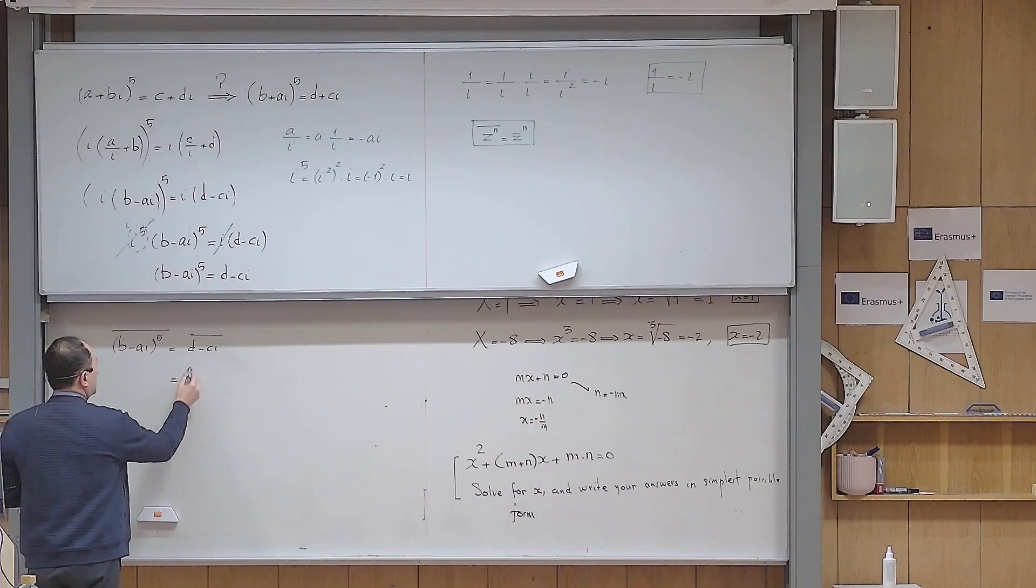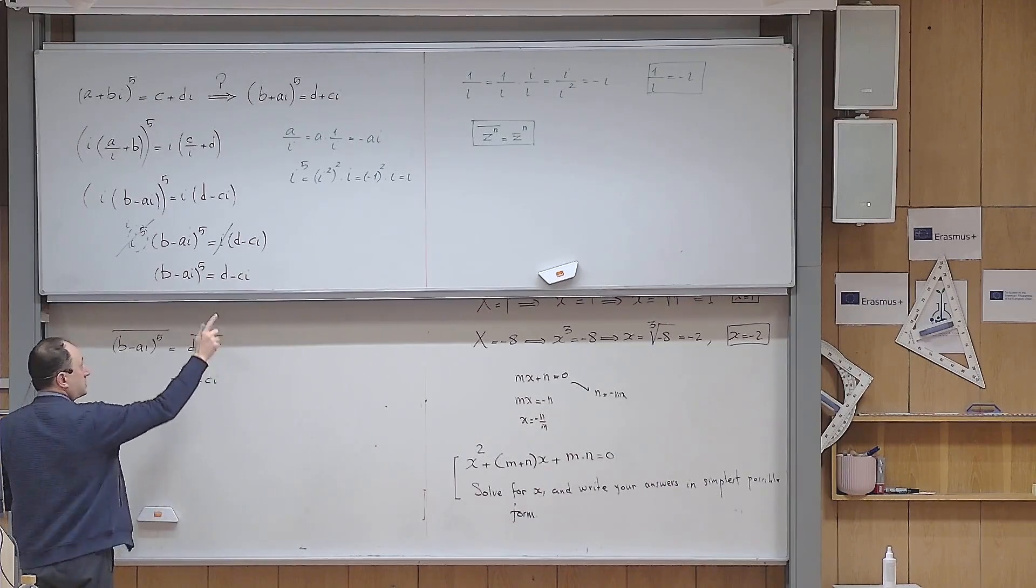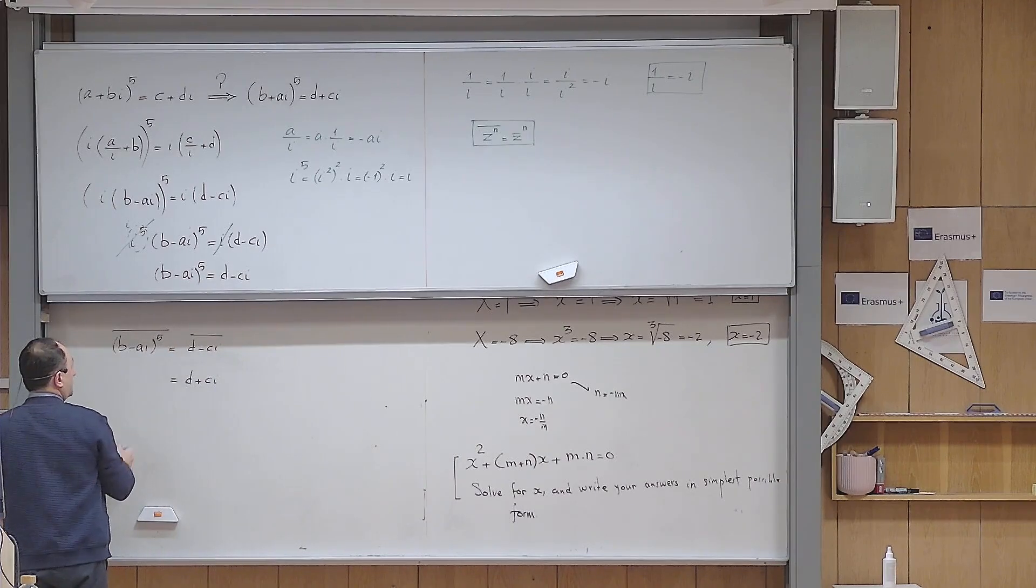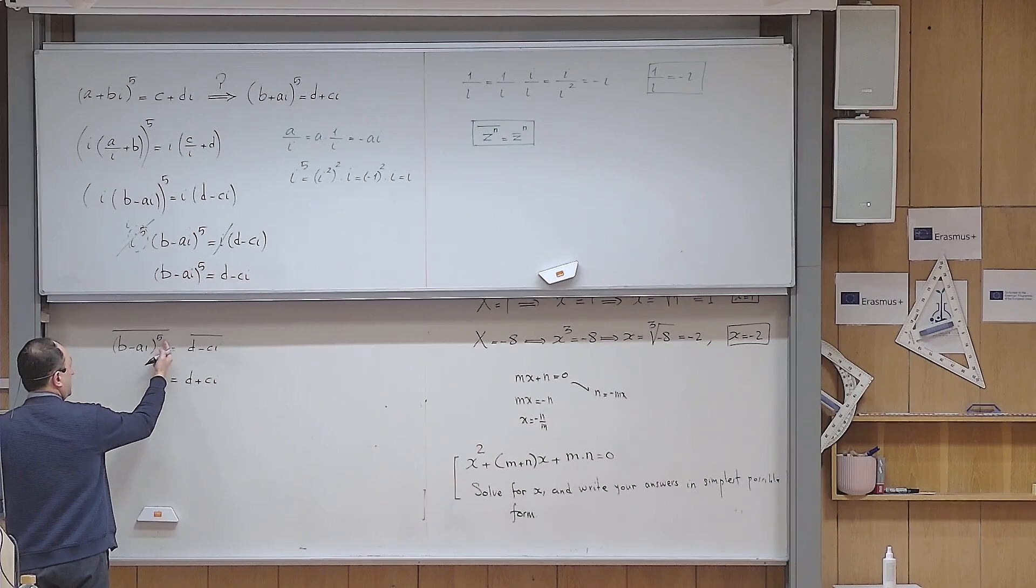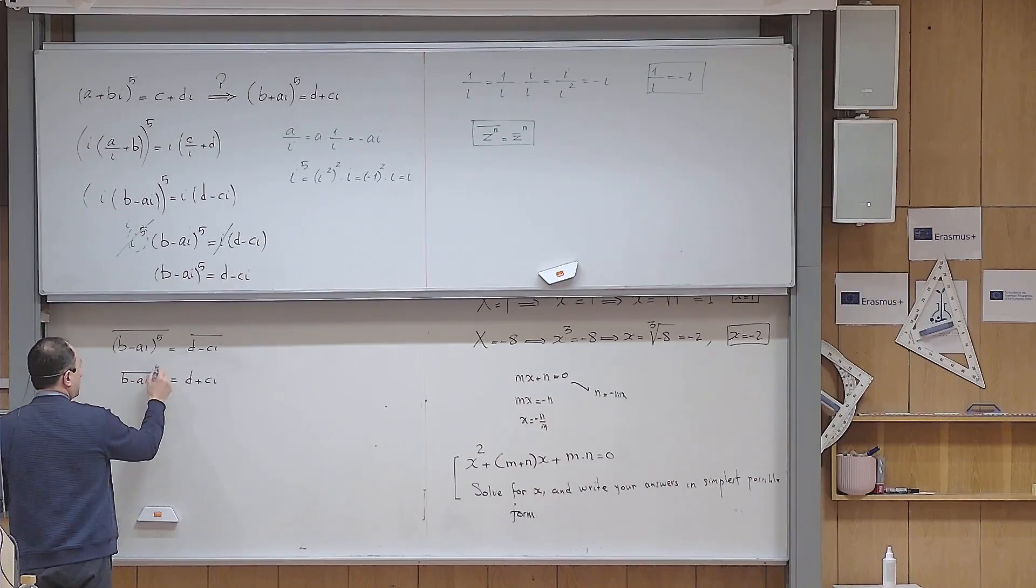The conjugate of the right hand side is just simply d plus ci. And because of that property, I can interchange these two operations: instead of raising to power five and then conjugate, I first conjugate and then raise to power five.